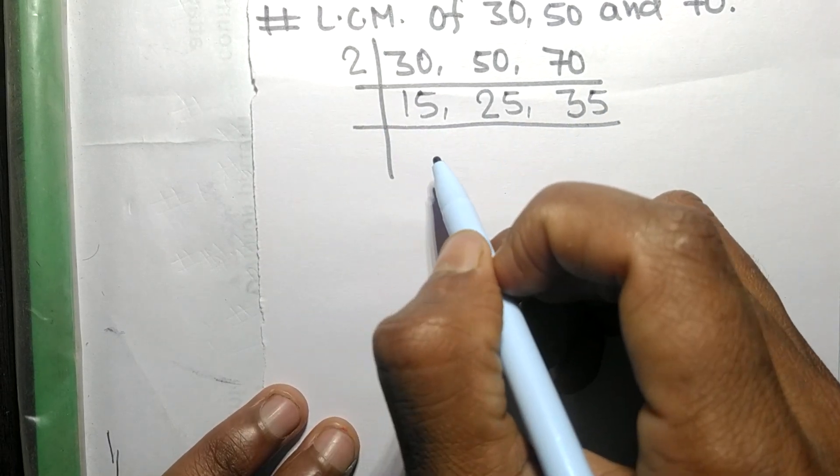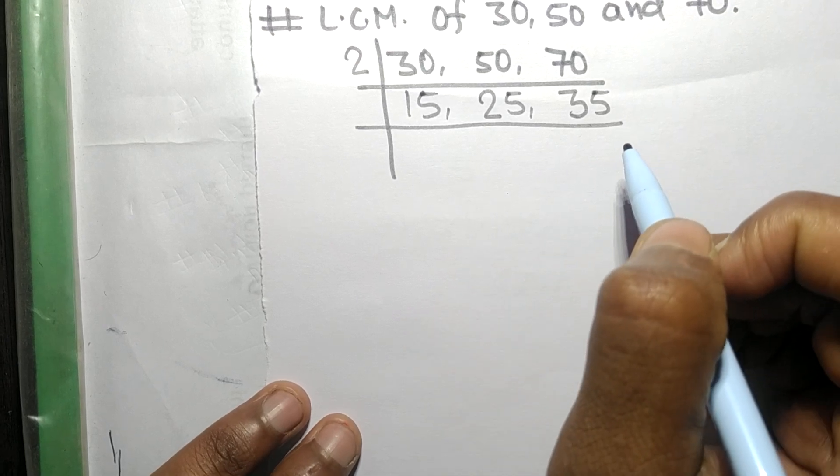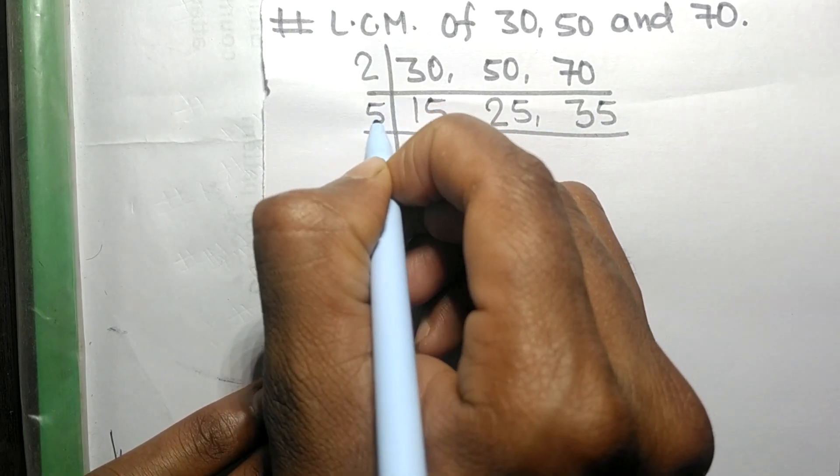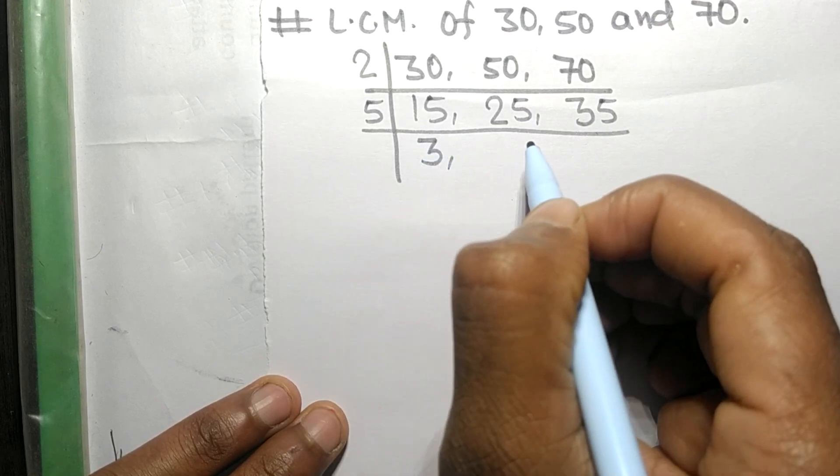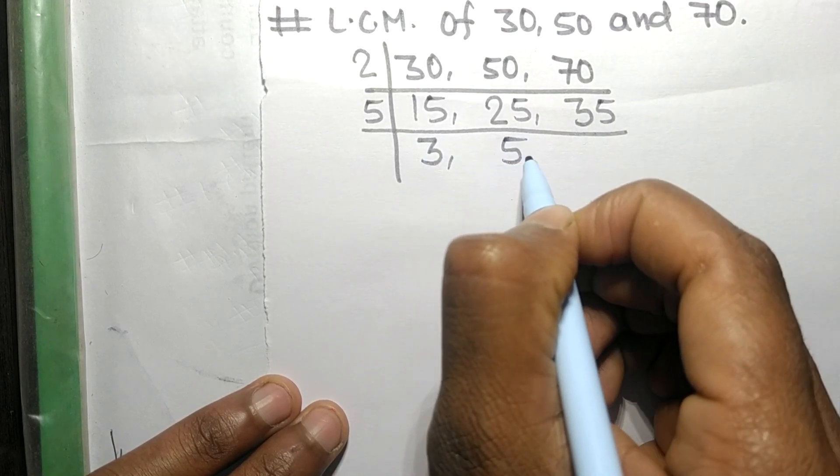5 times 3 means 15, 5 times 5 means 25, 5 times 7 means 35.